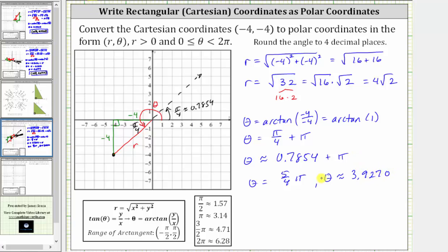So the exact polar coordinates that satisfy the given conditions for the Cartesian coordinates, negative four comma negative four, would be four square root two comma five fourths pi radians. But our homework system will also accept four square root two comma 3.9270 radians.